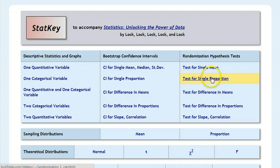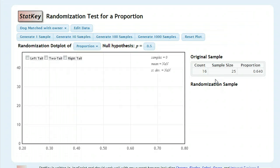And the test that we're going to do is a test of a single proportion, because we're dealing with a proportion of our population. So we click on that.